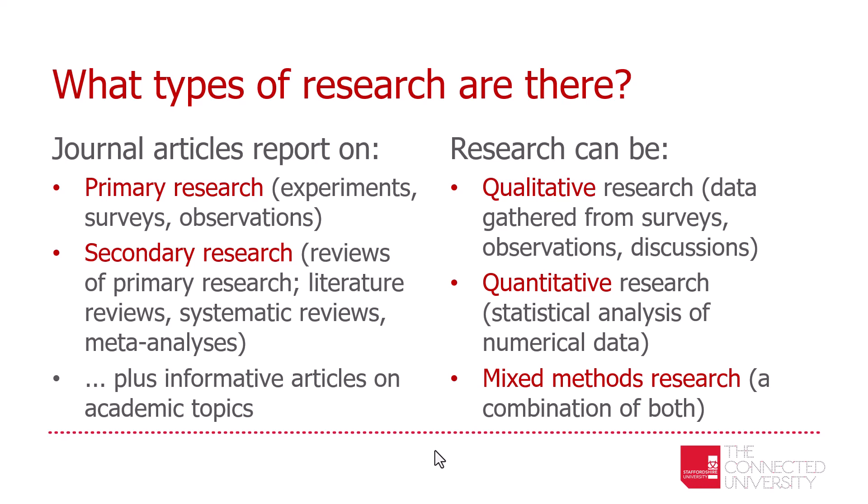Some articles are also informative articles on academic topics. Research can be qualitative — that means research gathered by talking to people, gathering their perceptions via surveys, or making observations and watching reactions and discussing issues with participants. They're basically trying to find out perceptions, reactions, and feelings about different topics. Quantitative data, however, involves statistical analysis of numerical data — gathered in a laboratory, from surveys, or from patient or student data. There's also mixed methods research, where researchers use a combination of both qualitative and quantitative approaches.